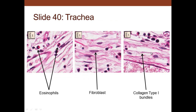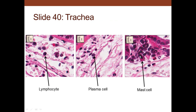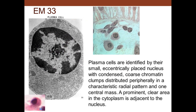Looking at a plasma cell, it can be identified by its nucleus positioned near the center of the cell with cartwheel-shaped chromatin—a hub with spokes radiating outward in a radial pattern.